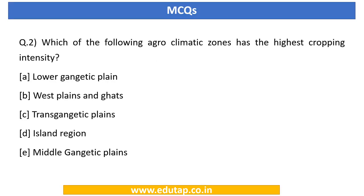The second question asks: which of the following agro-climatic zones has the highest cropping intensity? Options are Lower Gangetic Plain, Western Plain and Ghats, Trans-Gangetic Plains, Island Region, or Middle Gangetic Plains. If you are able to answer it well, great — if not, you will definitely be able to after this video.